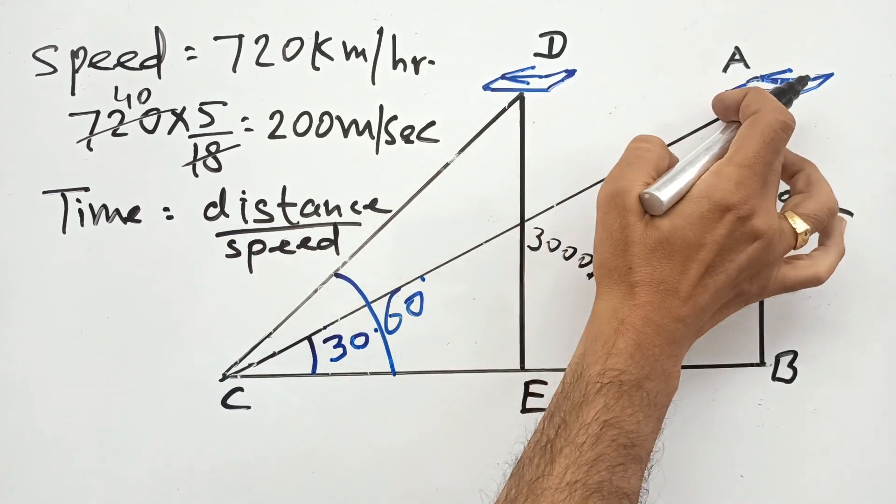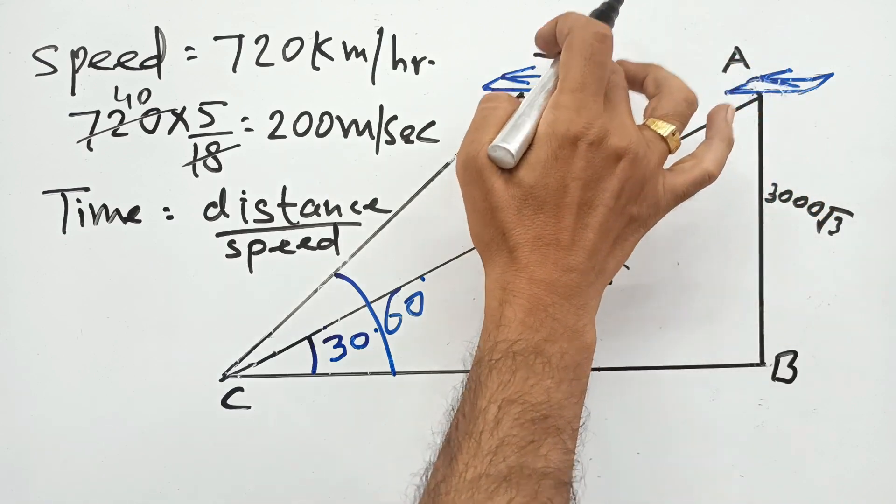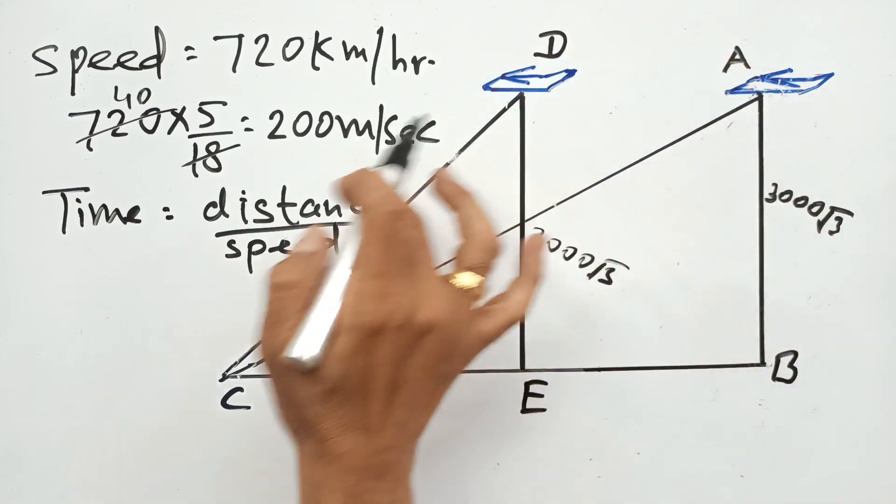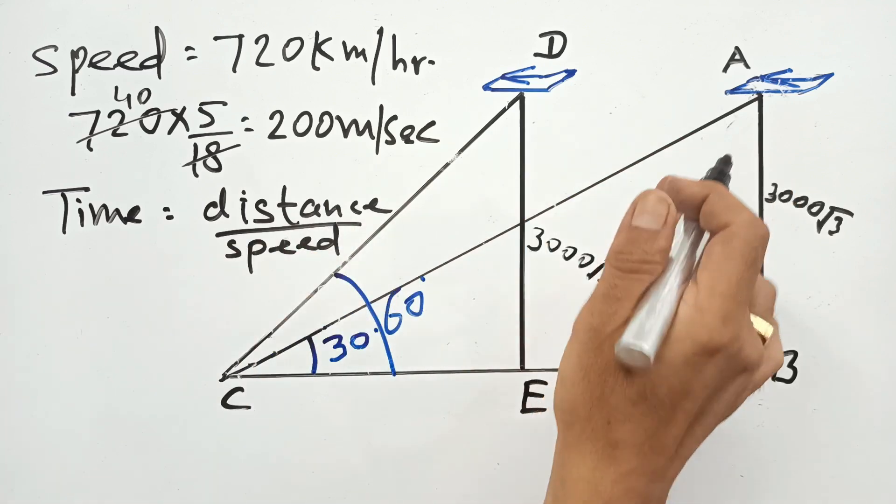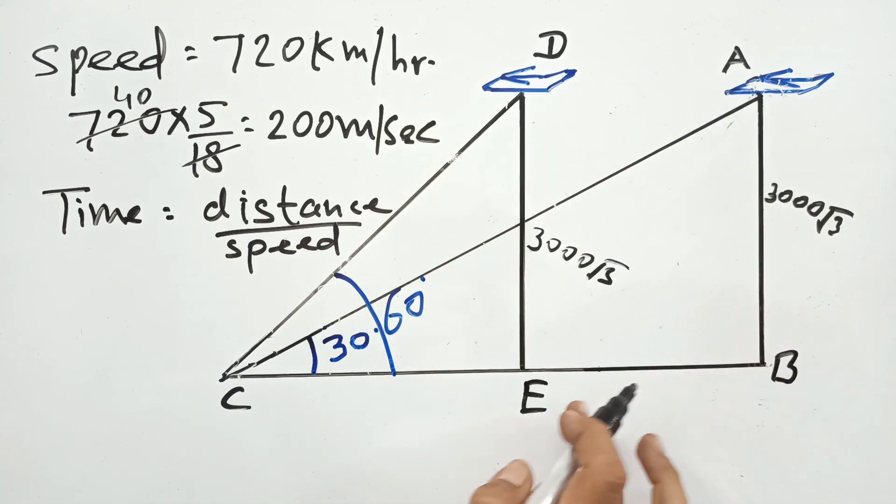This time to change the situation from A to D will be distance upon speed. Speed is given, now we need to find only the distance. So AD distance will be the same as AEB, so the target is to find out EB.